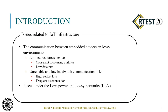In IoT, communication between embedded devices is in lossy environments. There are some problems due to limited resource devices, low bandwidth, and unreliable communication needs — for example, limited processing abilities, low data rates, high packet loss, and frequent disconnections.